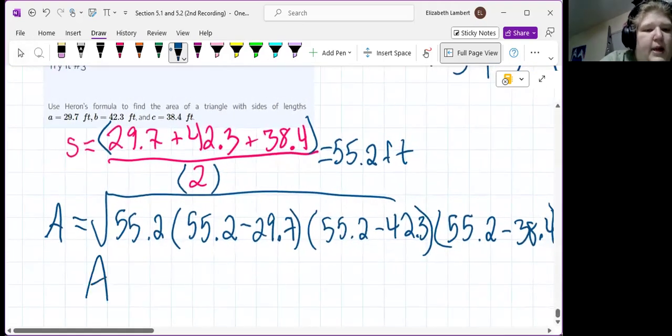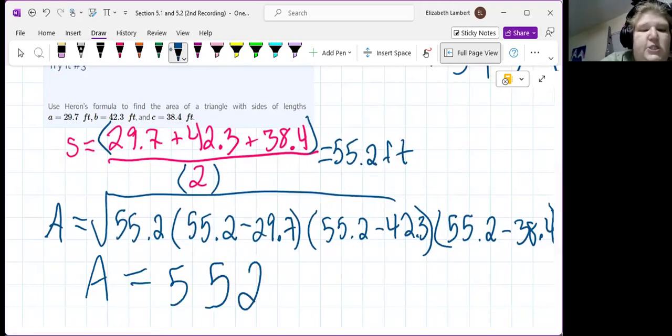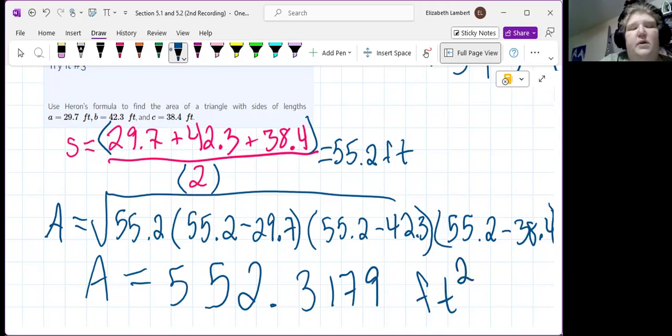So, our area here is 552.3179 feet squared. Now, if you actually look at the unit analysis here, like, our S, we added feets and divided by 2, so it is still feet. Then I have feet.